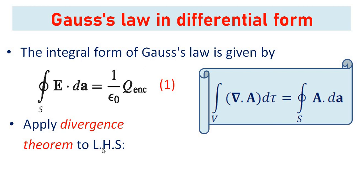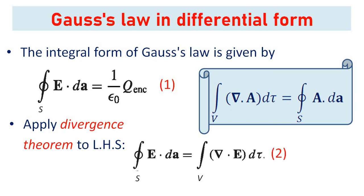The closed surface integral of E dot dA can be written as the volume integral of the divergence of E times d-tau. Let this be Equation 2.